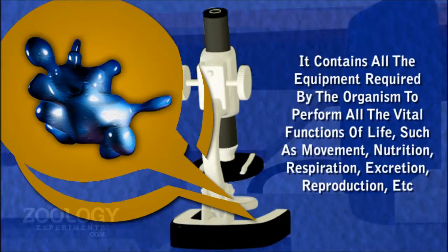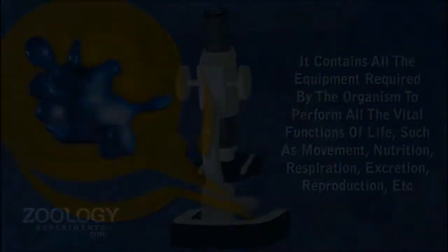The scientific name Amoeba proteus has been derived from two Greek words: 'amoeba', which means change, and 'proteus', the name of the mythical Greek sea god Proteus who could change into any shape.